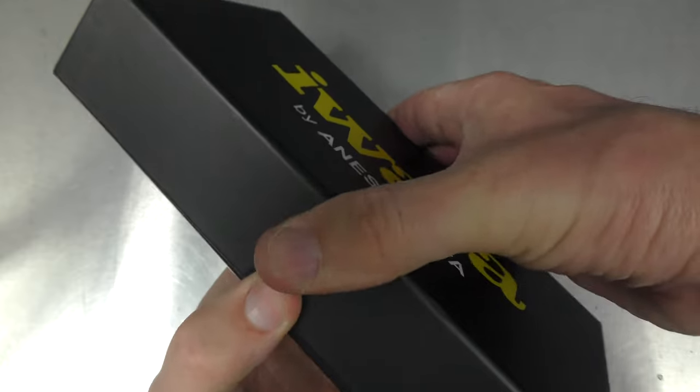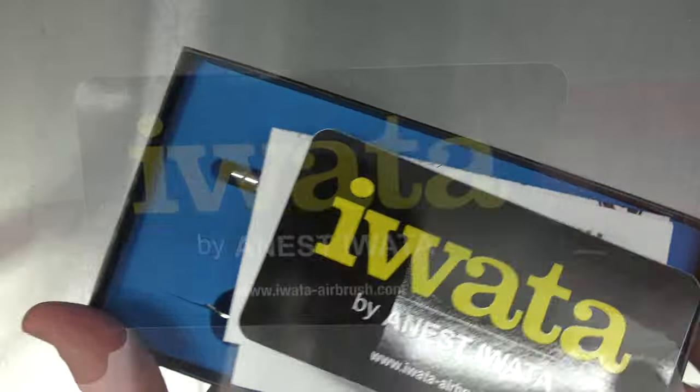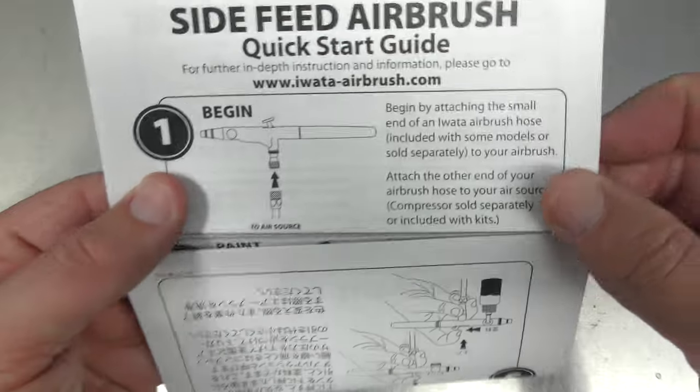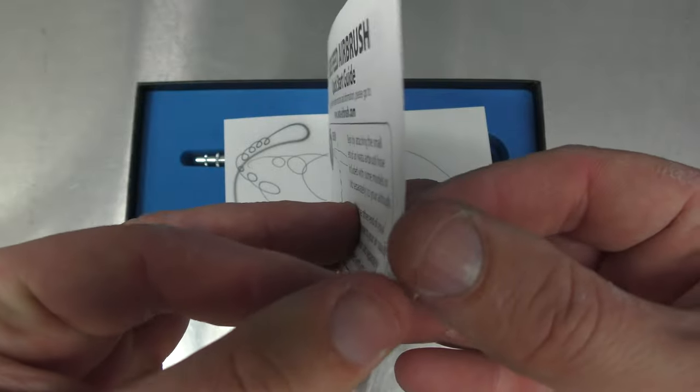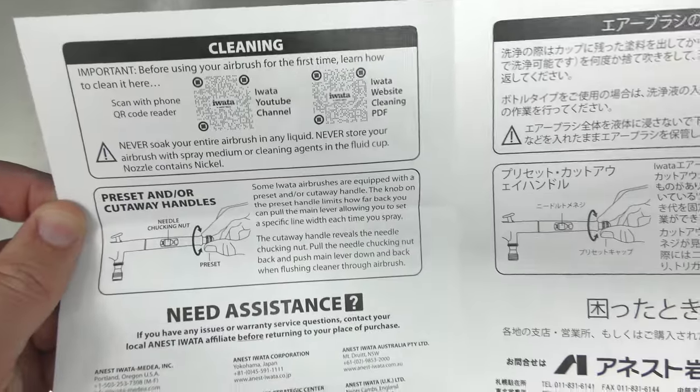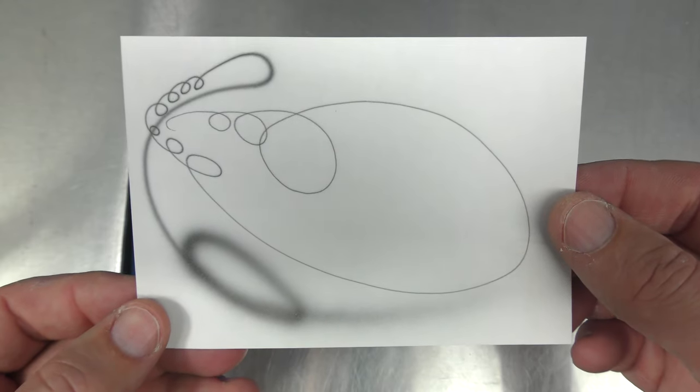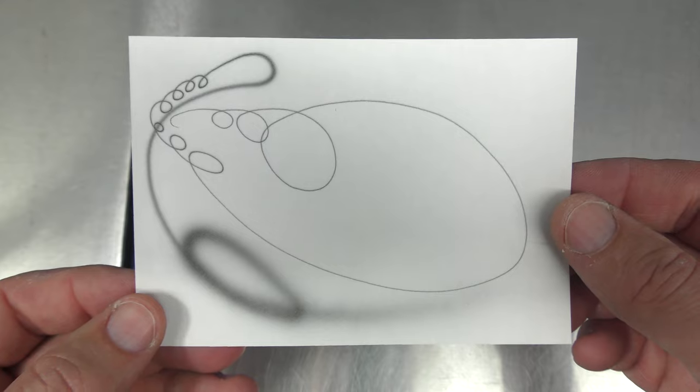Open up the box. We have the Awaita sticker, the side feed airbrush quick start guide. So you may want to read this if you've never used a side feed airbrush. The spray pattern. This is done before any of the airbrushes shipped from the Awaita factory.